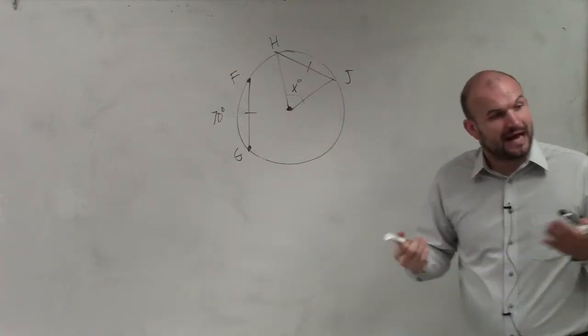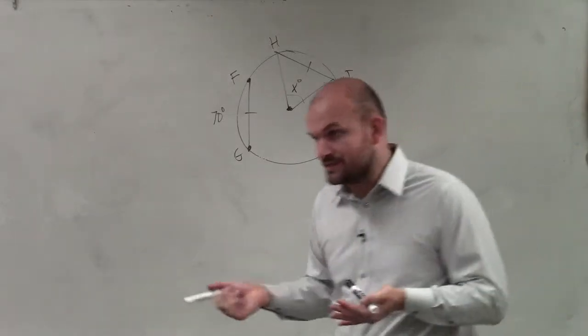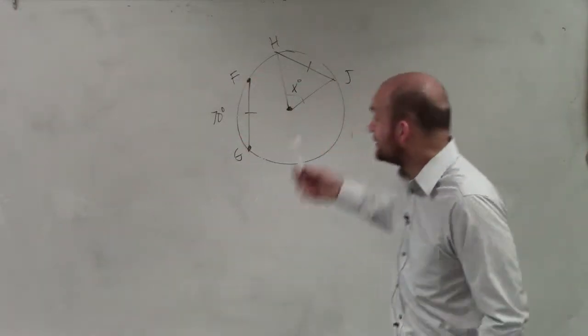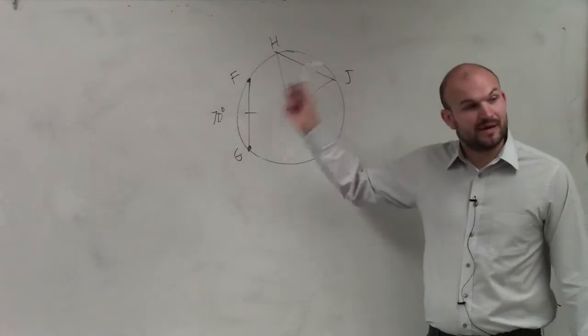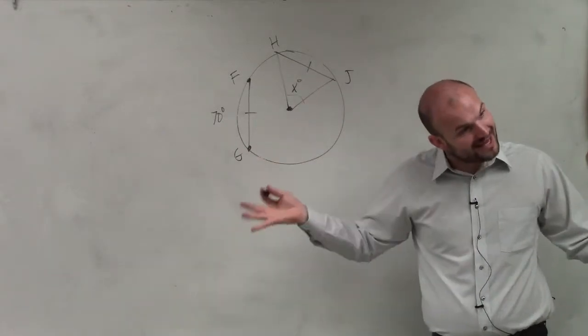actually, do we have either angles that are the same or chords that are the same? And obviously, you guys can see that the chords are the same length, right? We have the tick mark saying that they are the same length.